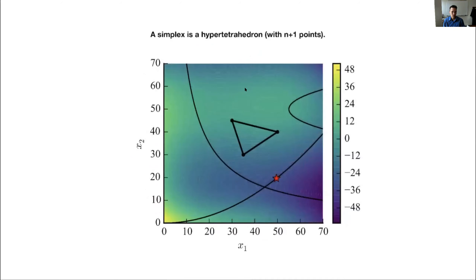With that background, let's talk about our first method: Nelder-Mead. We're going to use what's called the simplex. In 2D, a simplex is just a triangle, but in higher dimensions it's what we call a hyper-tetrahedron — like a pyramid in three dimensions. So this can be used in any dimension. The idea is we form this triangle shape, and notice it's not a single point where we get a derivative — we've just got this tetrahedron shape.